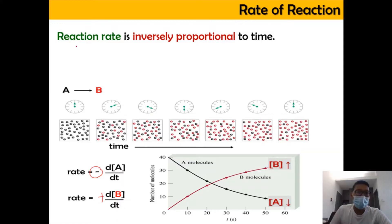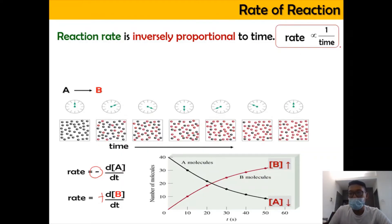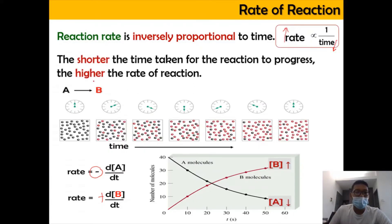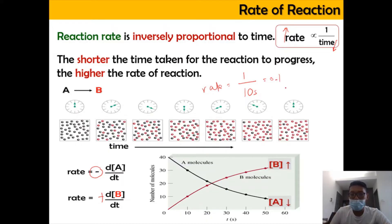Remember that the reaction rate is inversely proportional to time. When the time decreases, the rate of the reaction increases — the shorter the time taken for the reaction to progress, the higher is the rate of reaction. For example, if the time taken is 10 seconds, the rate is going to be 1 over 10, which is 0.1. But if the time is shortened to 5 seconds, it's going to be 1 over 5, which is 0.2. So you can see that when time is decreasing, the rate of the reaction will start to increase.